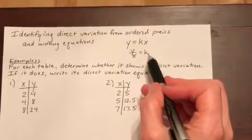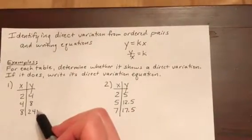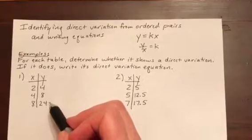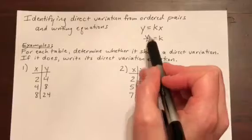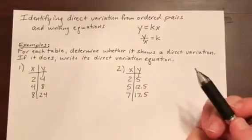And so if we want to test if a set of ordered pairs is direct variation, then what we need to do is we need to test each pair and make sure it provides the same ratio k.